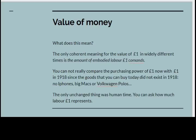What does the value of money mean? The only coherent meaning you can give for the value of one pound in widely different times is the amount of embodied labour that one pound commands — this was the conclusion that the classical economists arrived at. You can't really compare the purchasing power of a pound now with one pound a hundred years ago in 1918, since the goods you can buy today simply did not exist in 1918. There were no iPhones, Big Macs, or Volkswagen Polos. The only thing unchanged since 1918 is human beings and human time, and you can ask how much labour one pound represents.